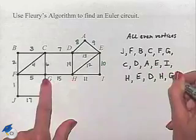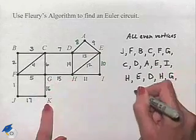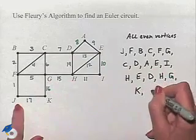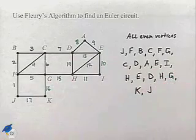Fifteen to G. Sixteen to K. And finally, seventeen to J, and we have our circuit.